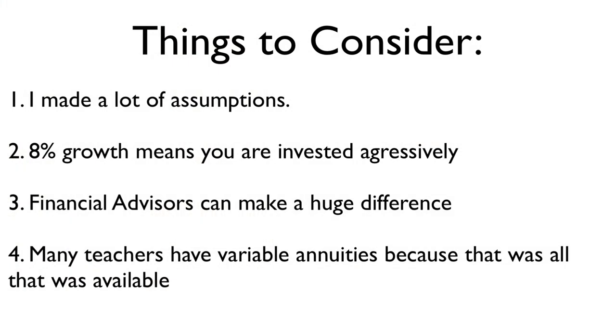The fourth thing to consider: the majority of teachers are in that highest-cost option — the variable annuity — because that's really what's always been offered and makes up most of the available options. Plus, representatives from those insurance companies are in schools all the time, educating and helping teachers because they get paid on those products. Meanwhile, low-cost providers like Vanguard don't send representatives walking around school districts — so you have to do your own research to figure out what's best for you.